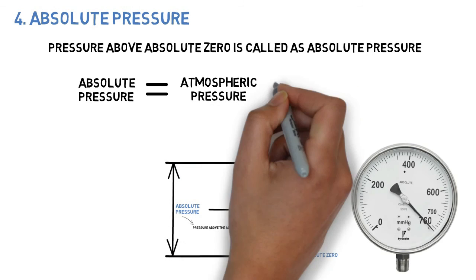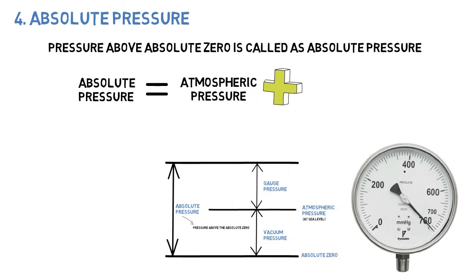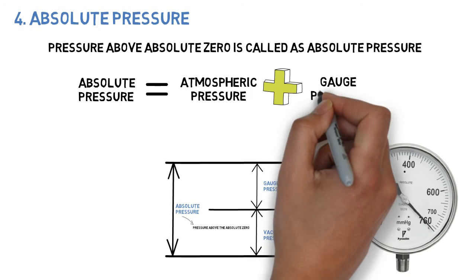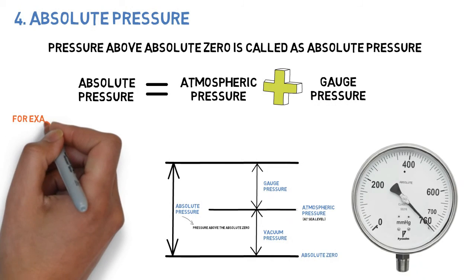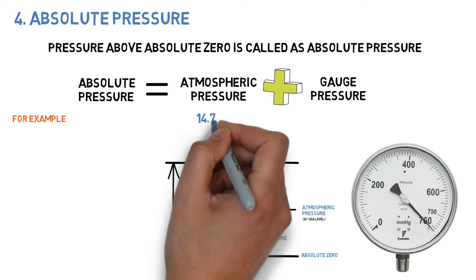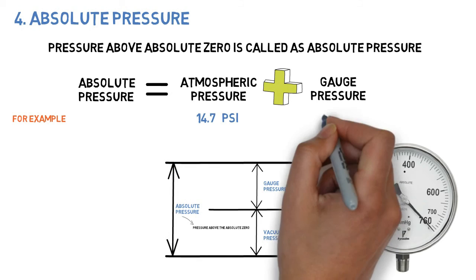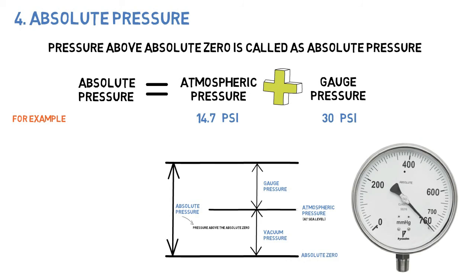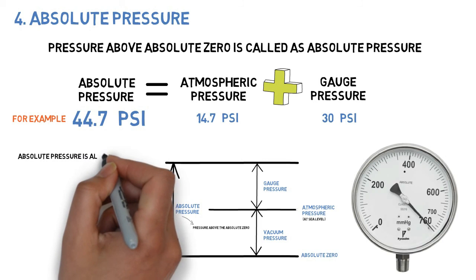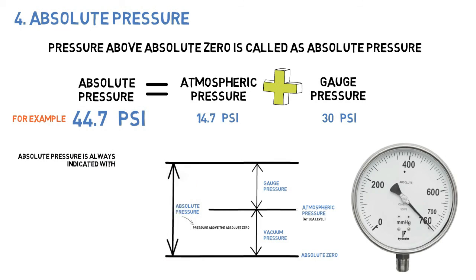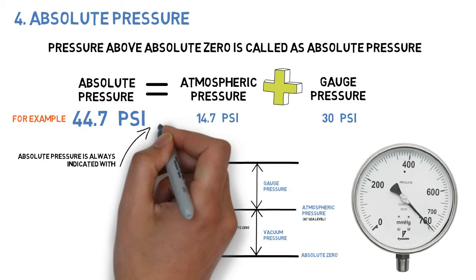Absolute pressure is equal to atmospheric pressure plus gauge pressure. Absolute pressure is always indicated with A at the end of the pressure unit.